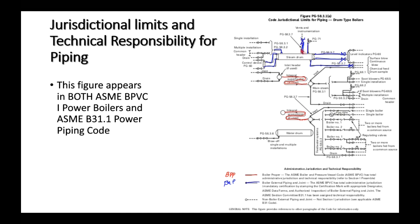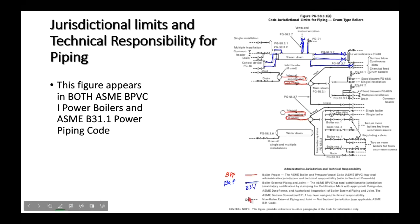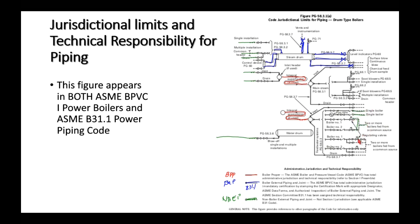Boiler external piping is under B31.1. Non-boiler external piping is the stuff we think about in power plants — blow-off lines, drains, vents from superheaters, main steam lines, feed water lines, and bottom blow-off. This is the big majority of what power engineers deal with, and it's all B31.1.